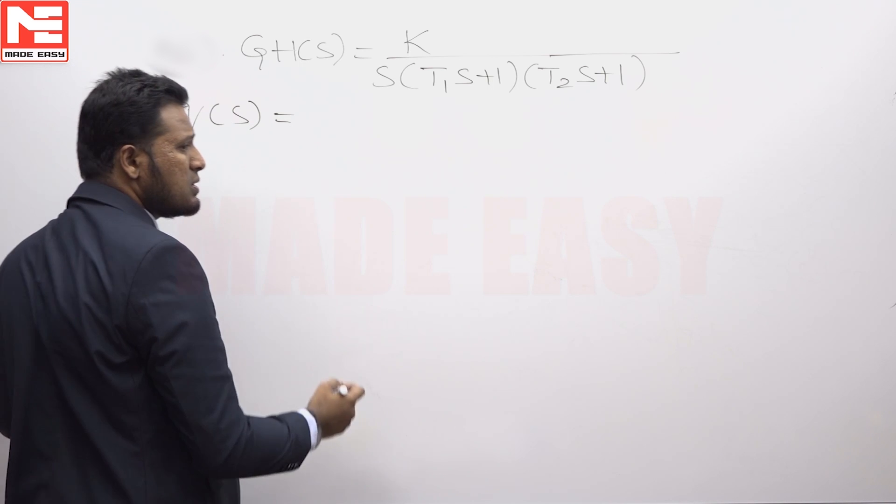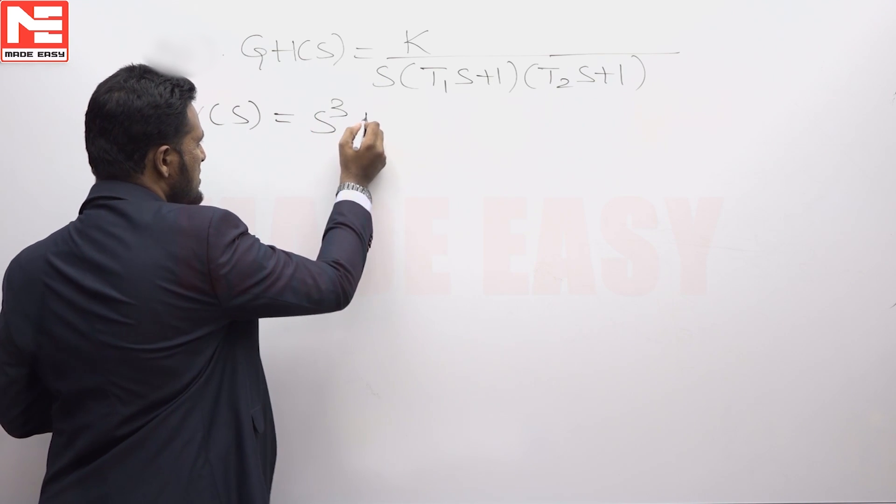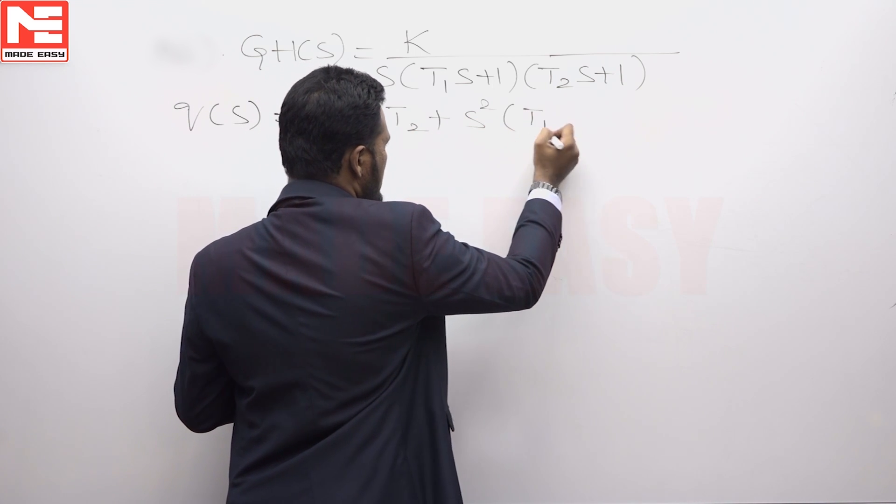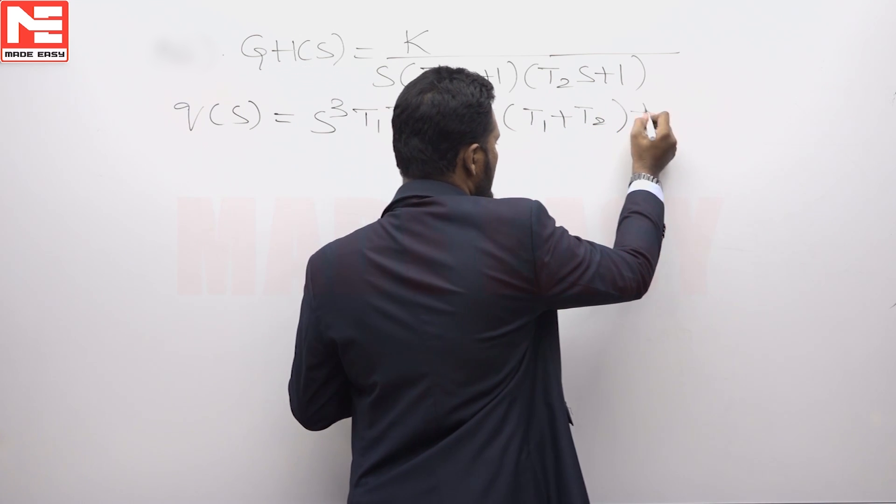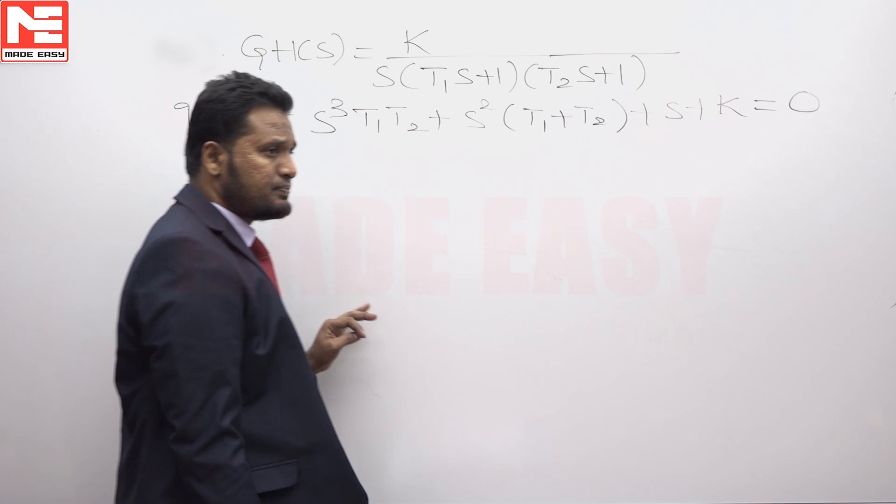We have to form the characteristic equation using the open loop transfer function, which is 1 + G(s)H(s) equals 0. This comes out to be s³T₁T₂ + s²(T₁ + T₂) + s + k equals 0.